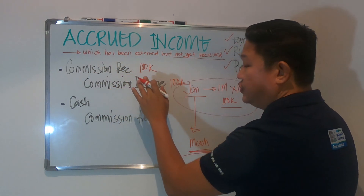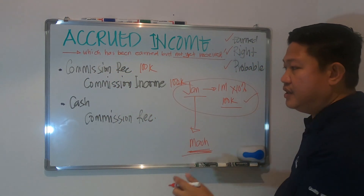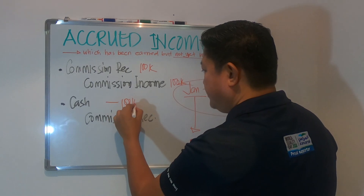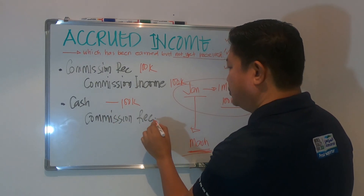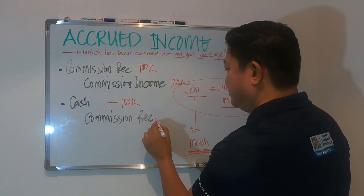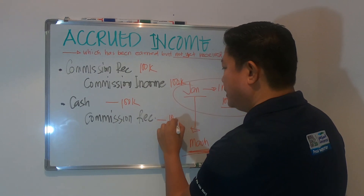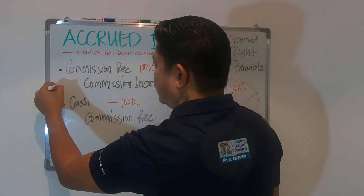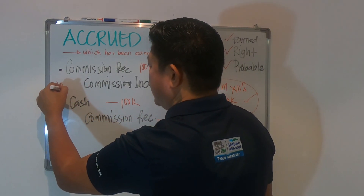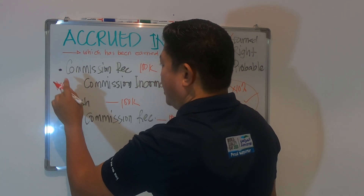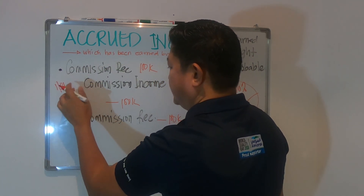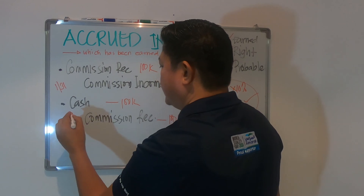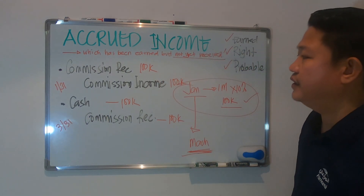Now in March, this commission receivable needs to be collected. So you have to debit cash and credit commission receivable. This first transaction is the adjusting entry on January 31, and the collection entry is for March 31.